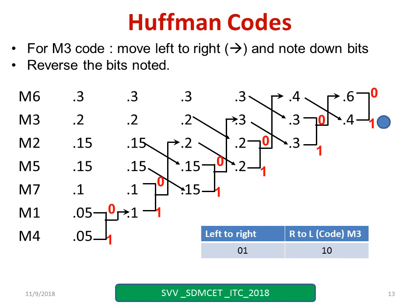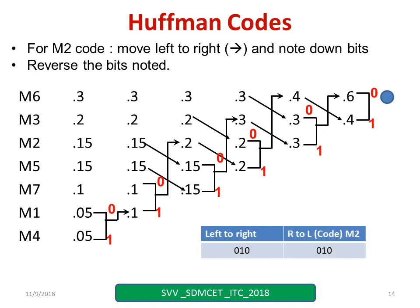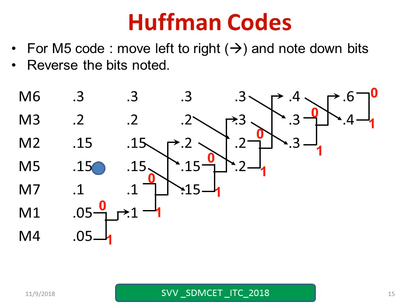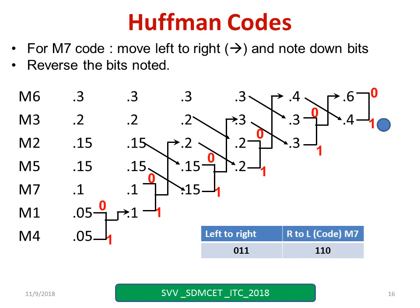For M2, I get 0, 1, 0. Reverse this — I get 0, 1, 0. For M5: 1, 0, 1, 0 — so I got 1, 1, 0; reverse it, you get 0, 1, 1 as the code. For M7 I got 0, 1, 1 — reverse it, you get 1, 1, 0 as the code.